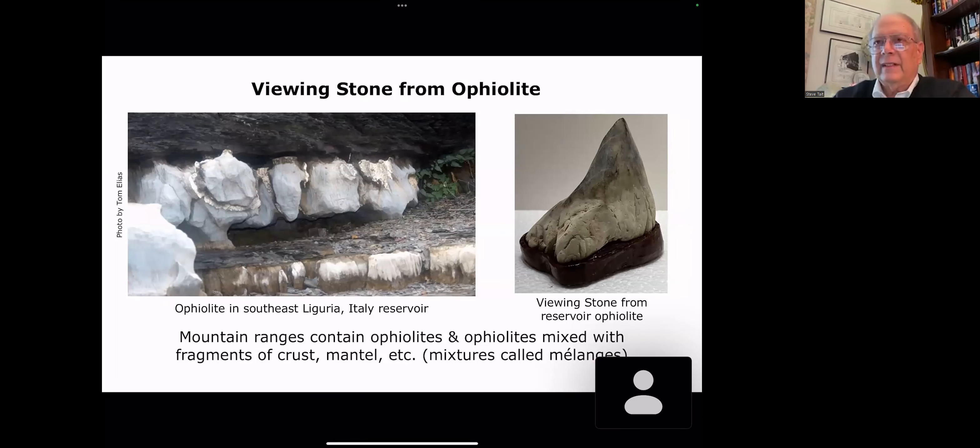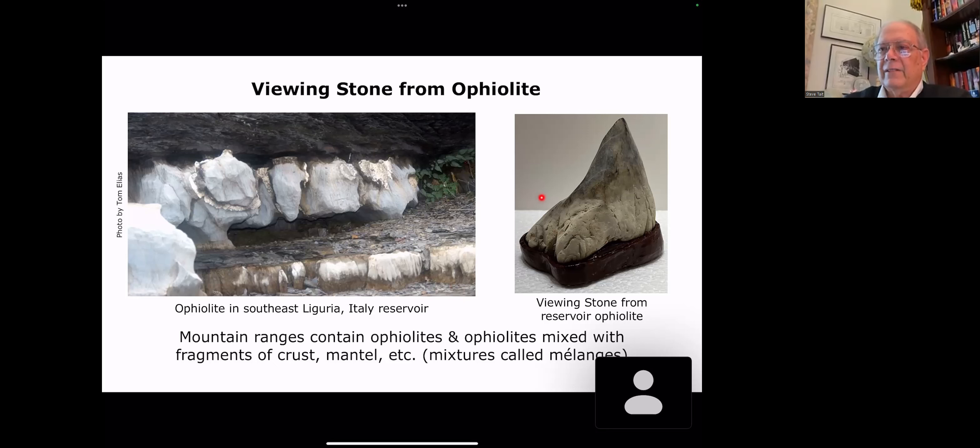This is a picture of an ophiolite in Liguria, Italy. This was taken by Tom. This is one of the coolest pictures of an ophiolite I have ever seen. You can see the kind of oval, sausage-shaped, lens shape of the ophiolite, or in this case, almost circular. Most pictures of ophiolites, when you see them, it's just a pile of broken stone. Not very pretty, but this is really cool. And from this ophiolite, here's the viewing stone that was collected by Tom at that.